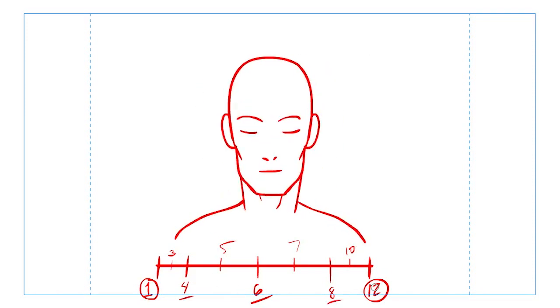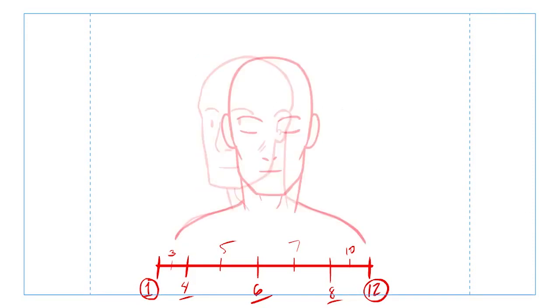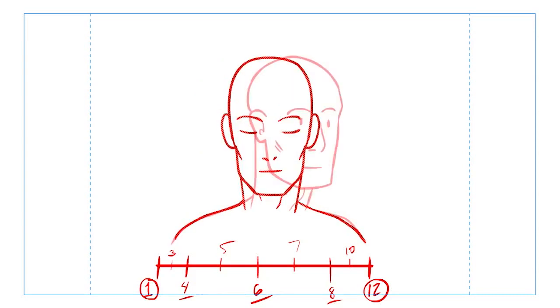So 4 and 8 would be breakdown drawings, and I'll show you how that works here and see if we can get something going in between all that. So 4 is going to favor 1, and I'd try to draw it a lot closer to the first position.